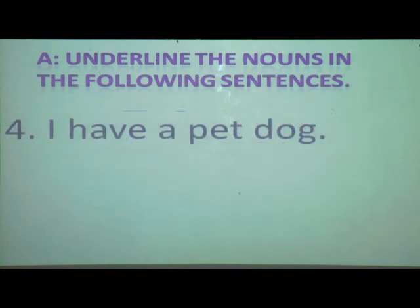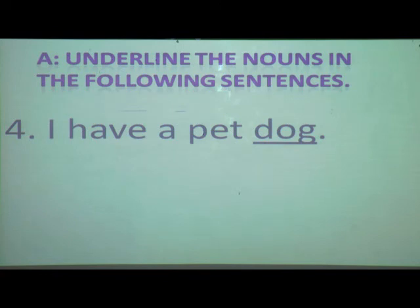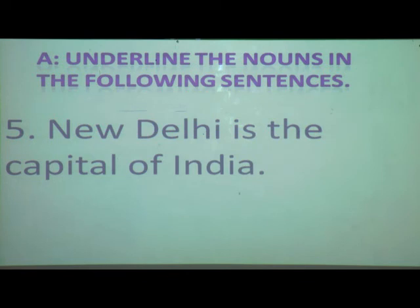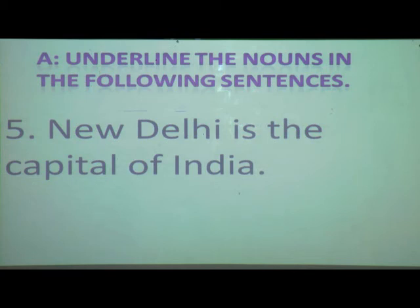Next: 'I have a pet dog.' The noun here is dog — the name of an animal. Fifth sentence: 'New Delhi is the capital of India.' New Delhi is a name of a place, capital is a common name given to the capital of states, and India is also a place. So New Delhi, capital, and India are the nouns.